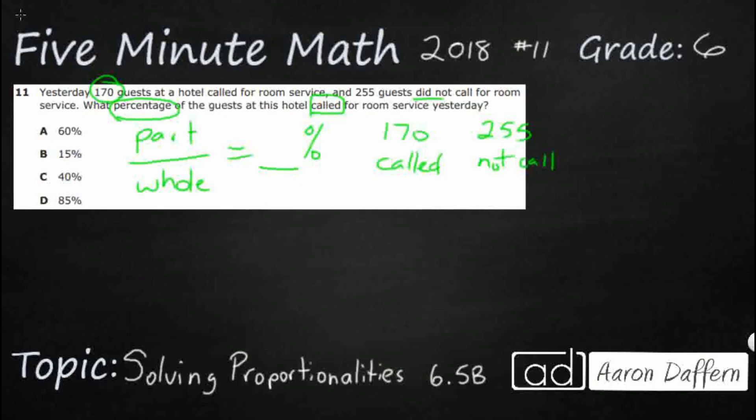I already know what the part is. So take a look at this right here. My part is going to be 170 because we're looking for this unit right here, the percentage of guests that called for room service, and we already know that 170 called for room service. So it seems like it might be a really simple problem off the bat,